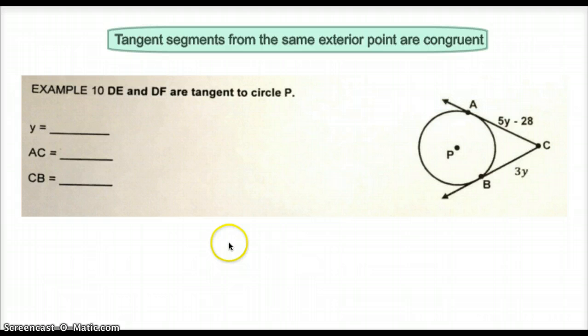One last property of tangents involves tangent segments from the same exterior point. And we know if we have tangent segments from the same exterior point, that they must be congruent. So when we look at this diagram, our tangent segments are here from the exterior point C to the tangent point A and from C to tangent point B. Because they originate from the same external point C, we know that tangent segment AC and tangent segment BC must be congruent. So that means then that 3Y has to equal 5Y minus 28. From here, this is an easy algebra to solve.